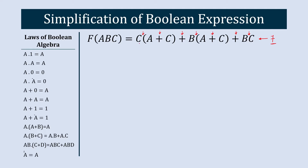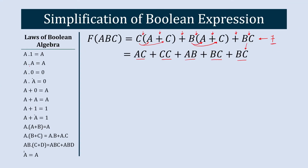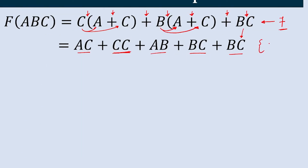In step number one of simplification, we'll multiply C with A and with C, and do the same process with B. So we get AC·CC plus AB plus BC plus BC. Now, the law A·A gives us A, so C·C gives us C.